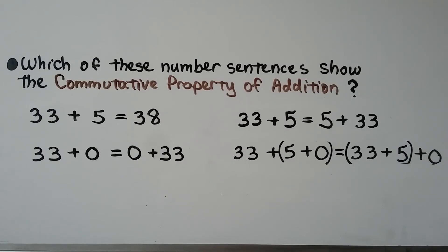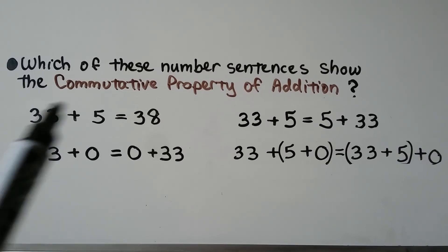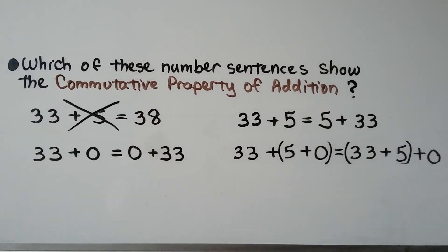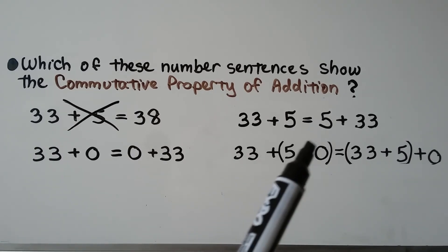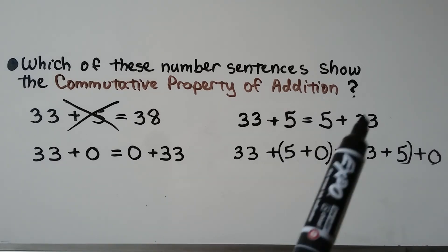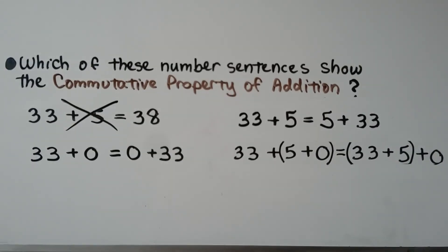Here we have 4 number sentences. Can you tell which of these show the commutative property of addition? There might be more than one. 33 plus 5 equals 38 — well, that by itself does not show the commutative property because it doesn't show it being added in another direction. Now look at this: 33 plus 5 is equal to 5 plus 33. Yes, that does show the commutative property because it shows it being added in either direction.